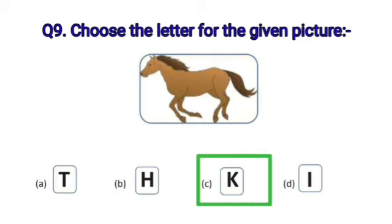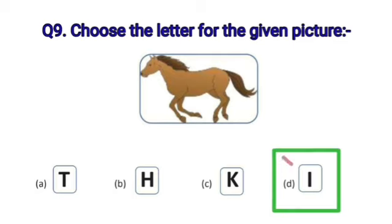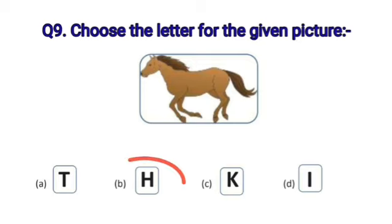Now, is it K, Horse? No, children. Is it I? No, this is not I. So, the correct option is, B, H, Horse.